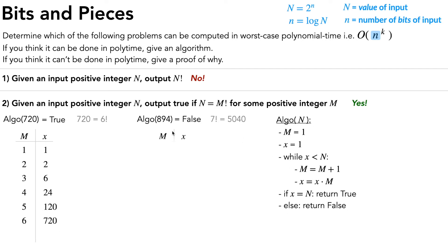Let's try the false example. It starts off pretty much the same, but we have one more iteration where M equals 7 and x is equal to 5040. And at this point, we reach the else case and we return false.